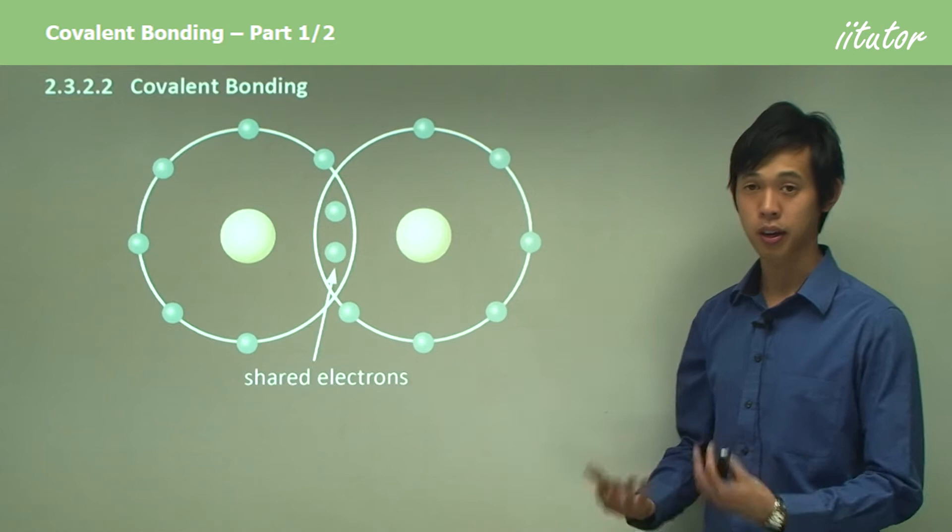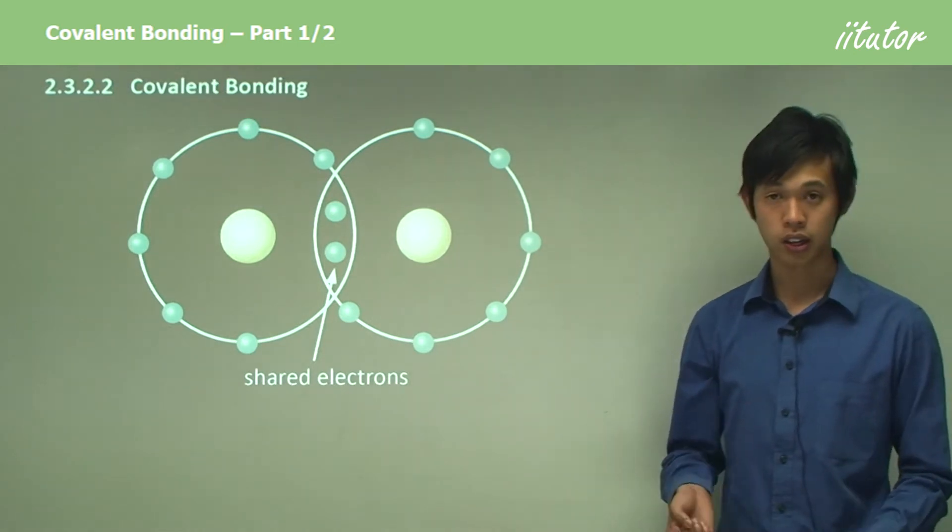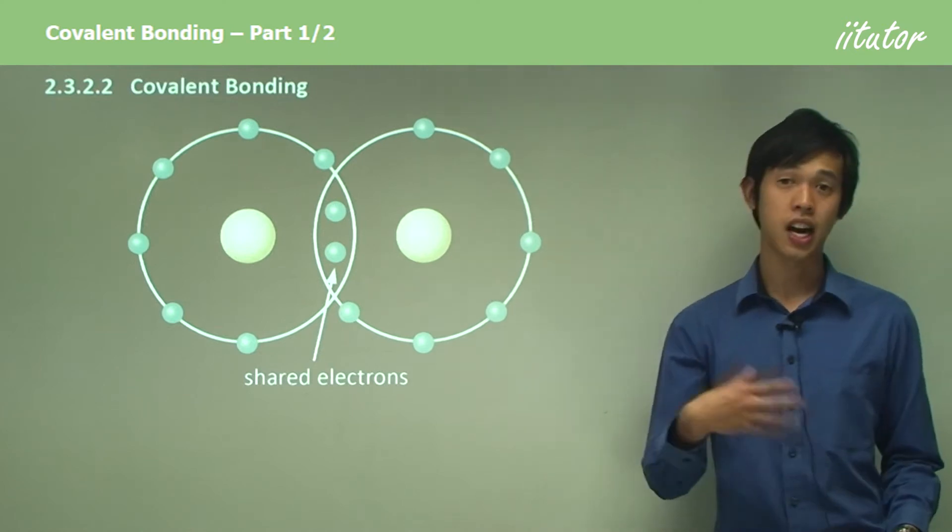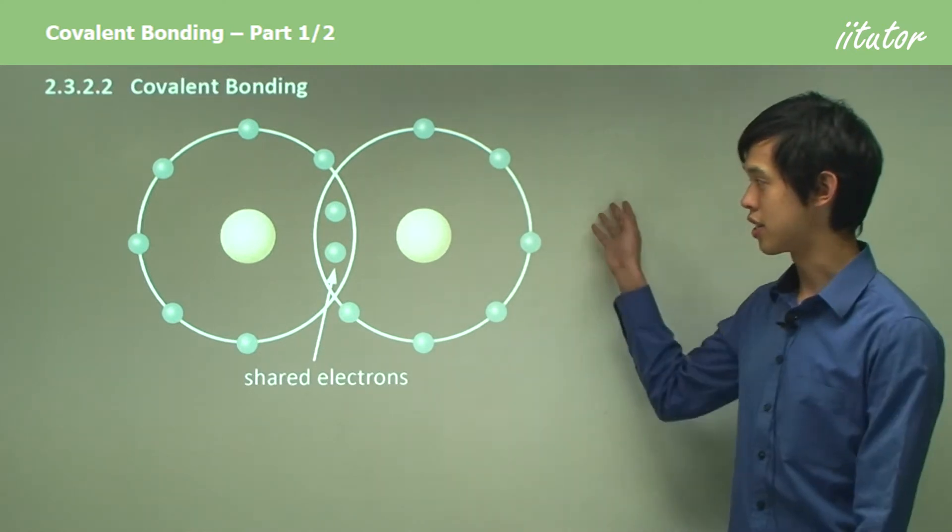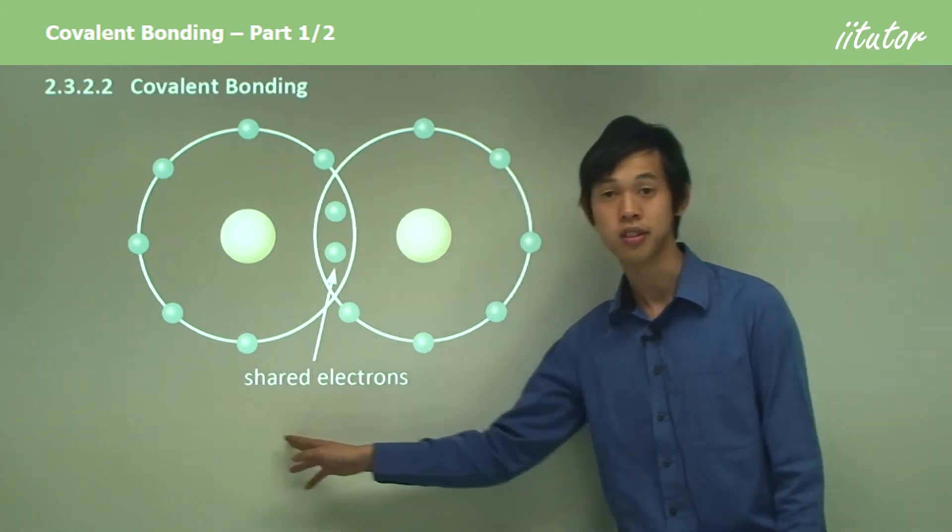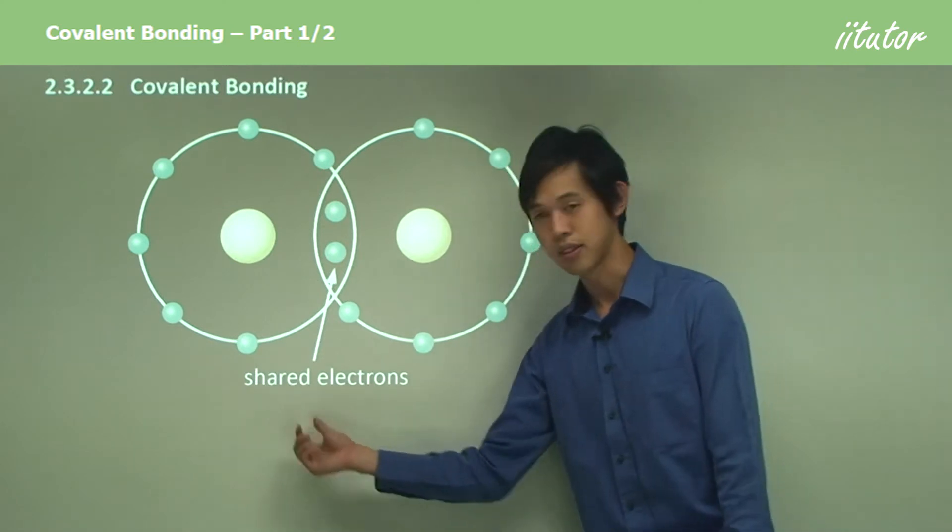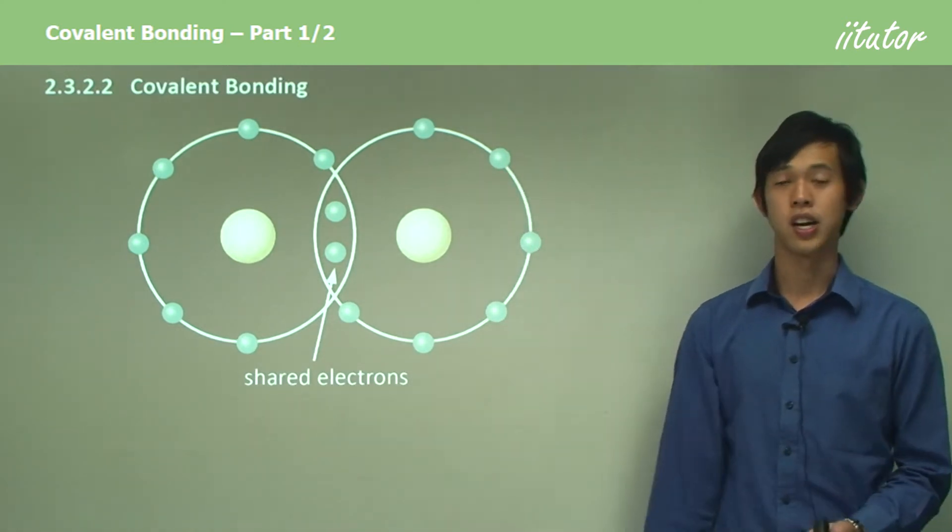In last lesson we looked at ionic bonding and why certain chemicals bond ionically. In this lesson we're going to talk about the other form of bonding, which is covalent bonding. As a way to introduce you to this topic, you can see there's going to be something to do with shared electrons. We're going to try and see what happens when we share electrons rather than just give them away like in ionic bonding.